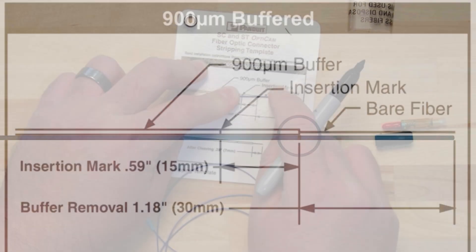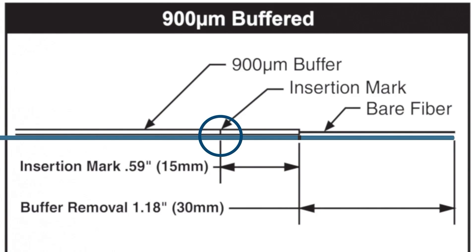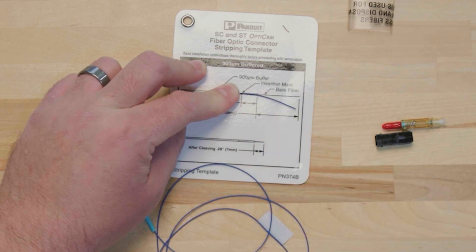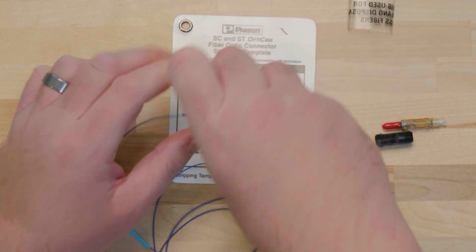The second mark is the insertion mark, which indicates how far the fiber should be inserted into the connector. Make an insertion mark on the buffer 0.43 inches or 11 millimeters to the left of the stripping mark.